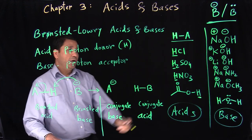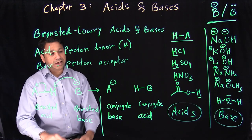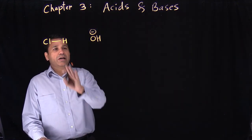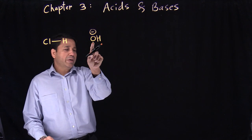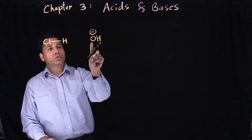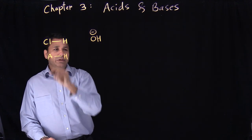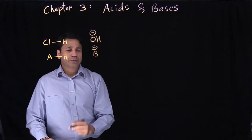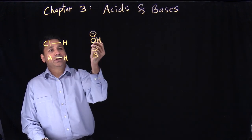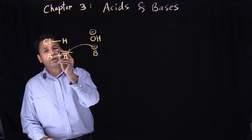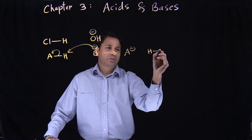Let's take a real example: HCl and NaOH — a real acid and a real base. HCl is your acid (HA), and OH minus from NaOH is your base (B minus). Applying the same logic, the base picks up the hydrogen, the electron pair goes on A — here A is Cl — so that becomes Cl minus. Oxygen picks up the hydrogen and becomes H2O.